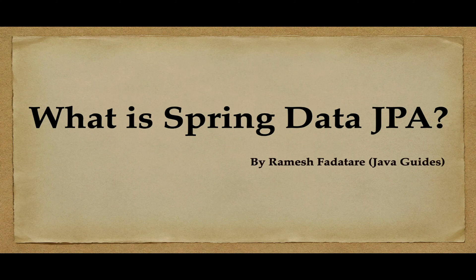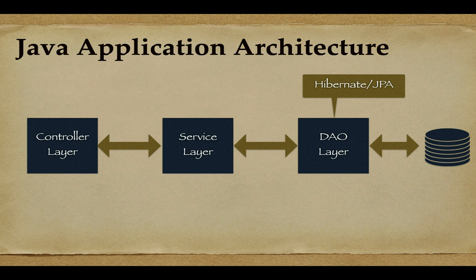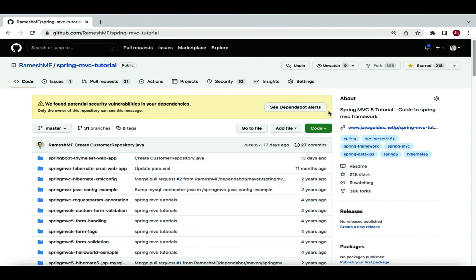Welcome back. In this lecture we'll take a look at what Spring Data JPA is. Before understanding Spring Data JPA, let's first understand the problem it solves. Consider a Java application with a three-layer architecture: a controller layer, service layer, and DAO layer. Typically we use JPA/Hibernate to develop the DAO layer, but if we use Hibernate we need to write a lot of code.